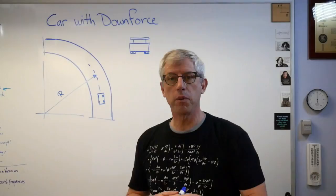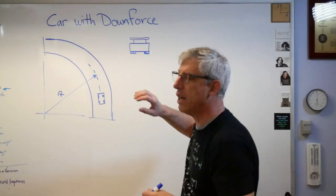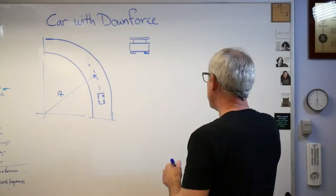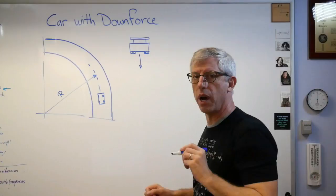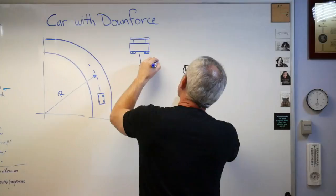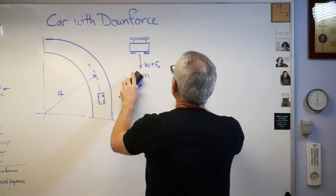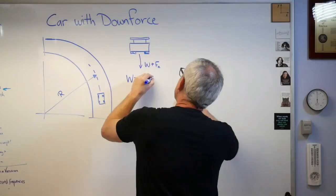We've got two forces coming down now. The force down is now not just the weight, it's the weight plus the aerodynamic downforce. So W is MG plus aerodynamic downforce. Let me make this bigger for you.